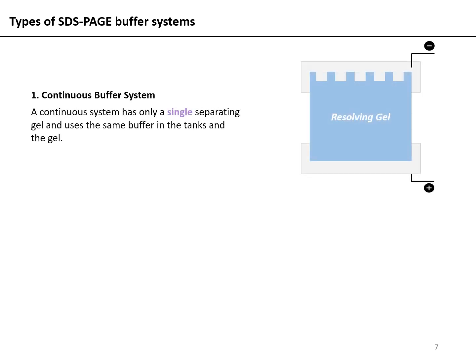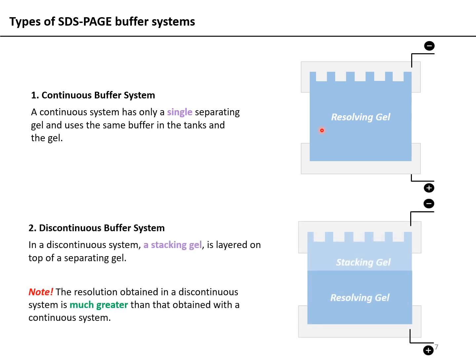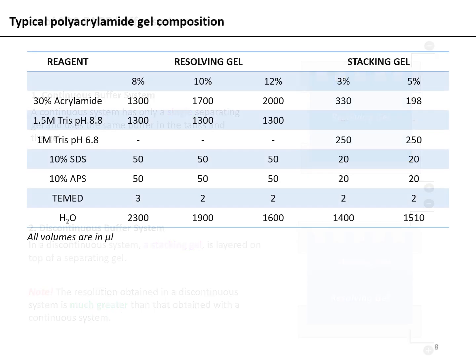There are two types of SDS-PAGE buffer systems. A continuous system has only a single separating gel and uses the same buffer in the tanks as well as in the gel — this is called the resolving gel because this is where proteins get resolved on the basis of their molecular weight. A discontinuous buffer system has a stacking gel layered on top of a separating gel, and with this system you can obtain much greater resolution compared with the continuous gel system.